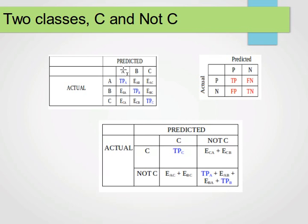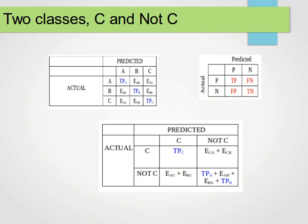For class C, it will be C and not C. The number of true positives is taken directly from the original confusion matrix. The number of false negatives is the sum of row C excluding the true positive for C: ECA plus ECB. The number of false positives is the sum of column C excluding the true positive for C: EAC plus EBC. And the number of true negatives for class C is found by crossing out row C and column C and summing all remaining values together. So if you see any formal or mathematical representation with sigma notation and summations, that's what it means in plain English.